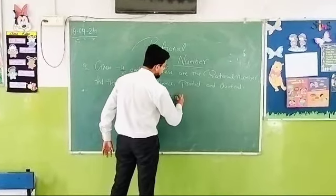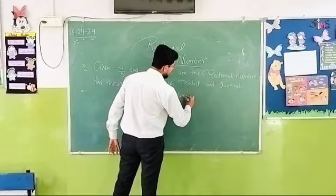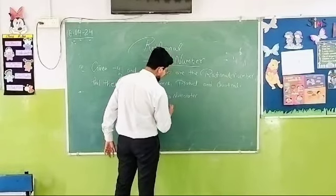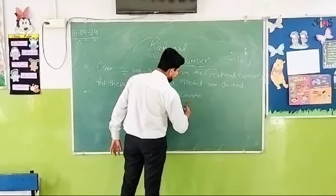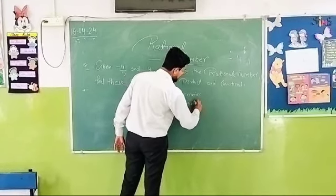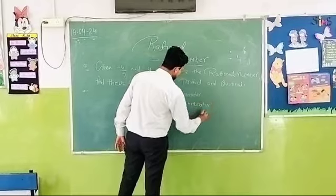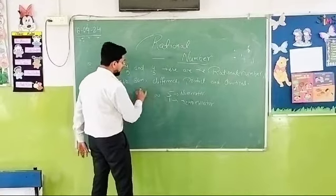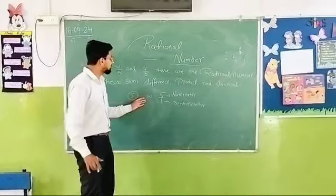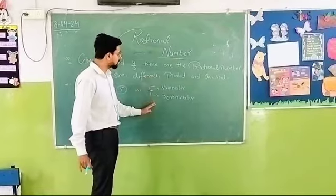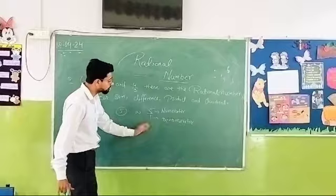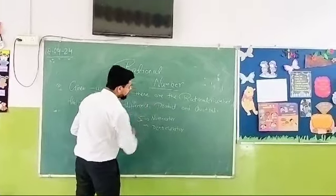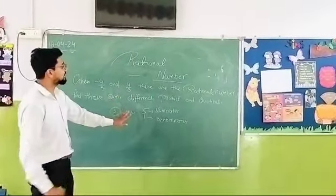This is called numerator and this is called denominator. So any integer, 5 is a positive integer, which can be written in the form of p upon q or numerator upon denominator. Like, I can write 5 as 5 upon 1. So this is the form of fraction. So that fraction is also part of the rational number.